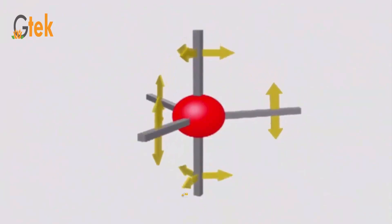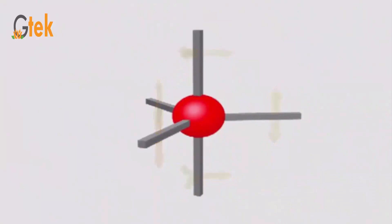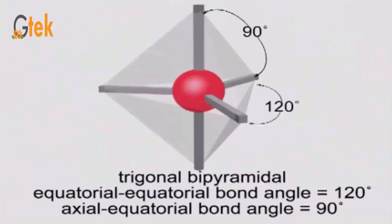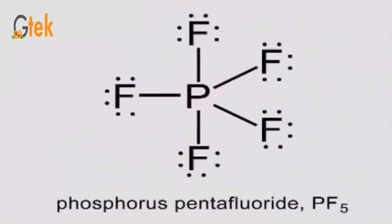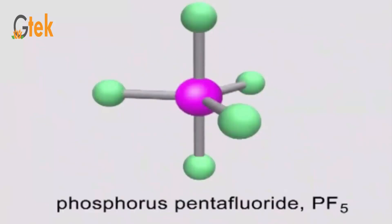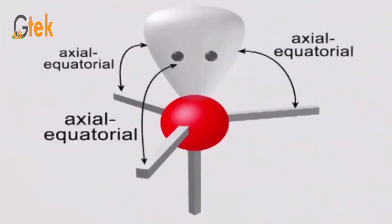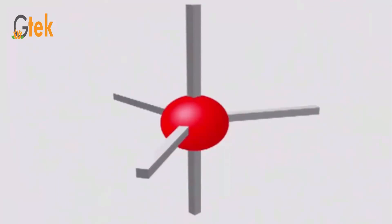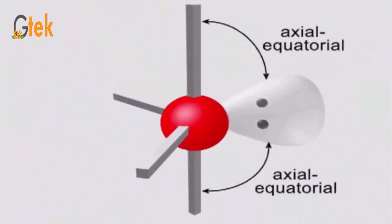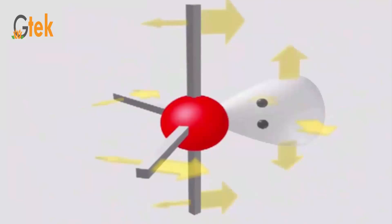We will now talk about trigonal bipyramidal arrangements. The equatorial bond angle is 120 degrees and the axial bond angle is 90 degrees. The typical example is phosphorus pentafluoride, PF5. The positions are described as axial and equatorial for this compound.